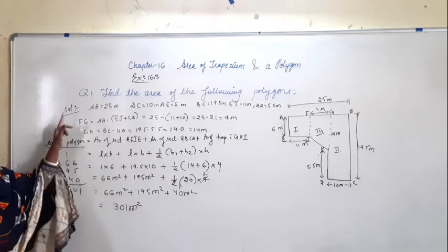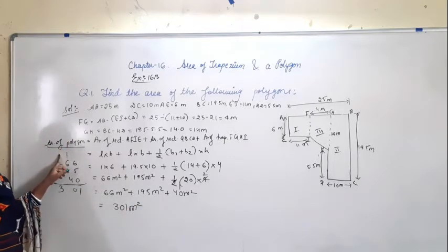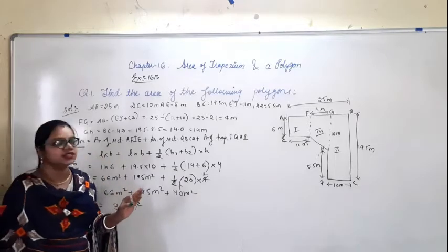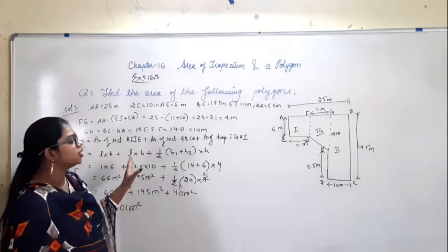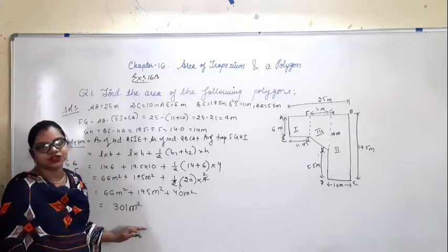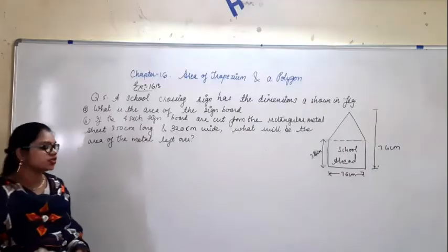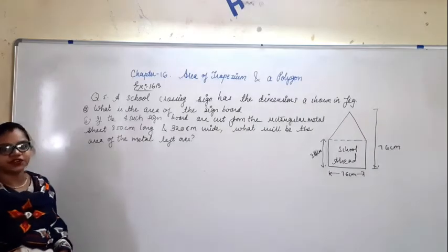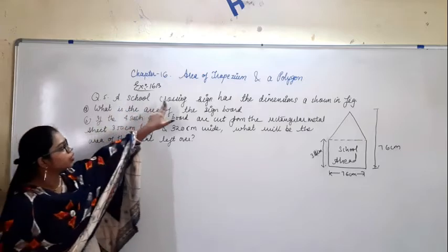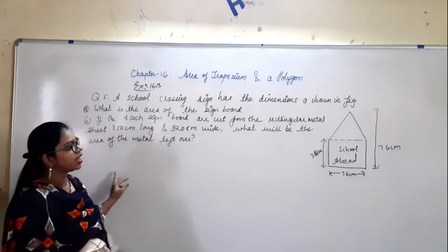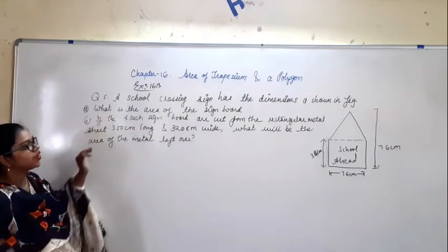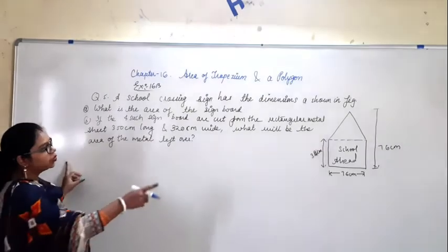So in this way you find the area of the polygon. This exercise is very easy — you just need to identify the correct measurements to find the area of the polygon. Now question 5 of this exercise: a school crossing sign board with given dimensions, first find the area of the polygon.